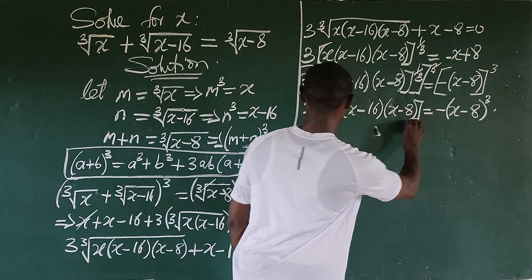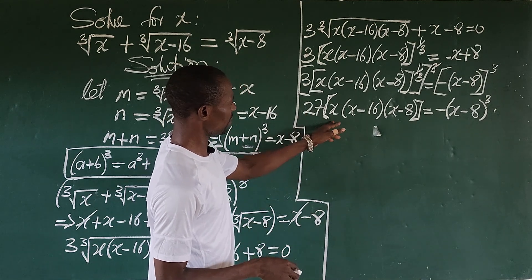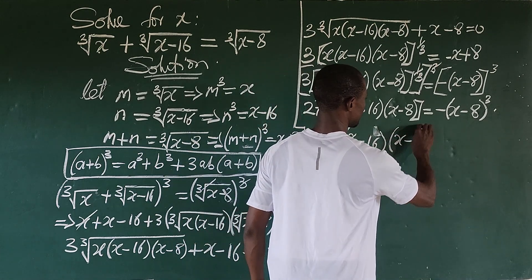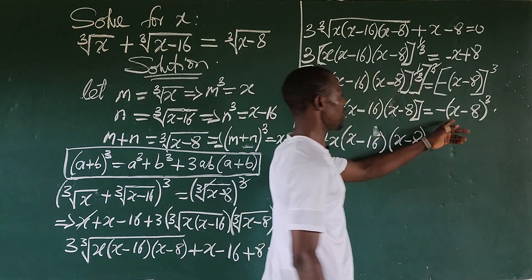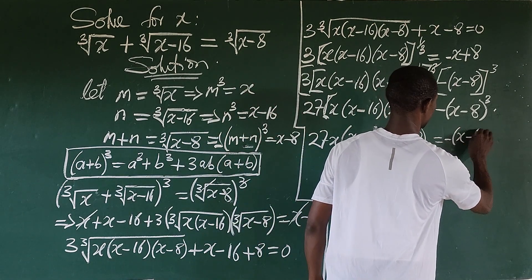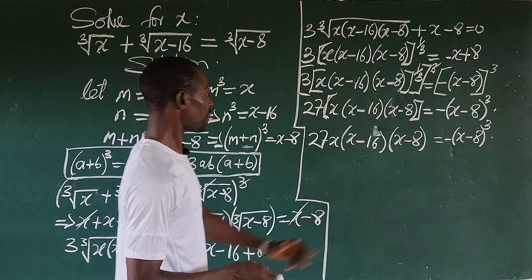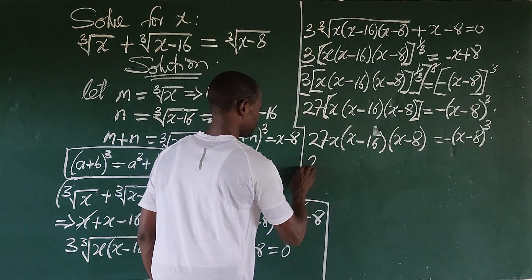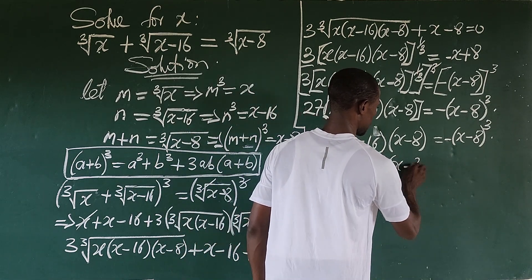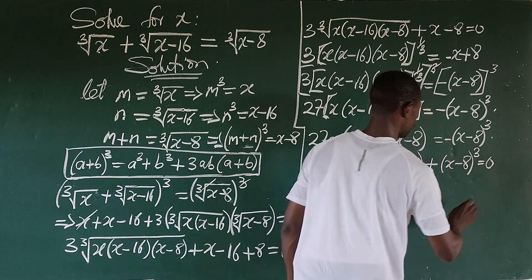With the full equation expanded, we move (x minus 8)³ to the other side: 27x(x minus 16)(x minus 8) plus (x minus 8)³ equals zero.